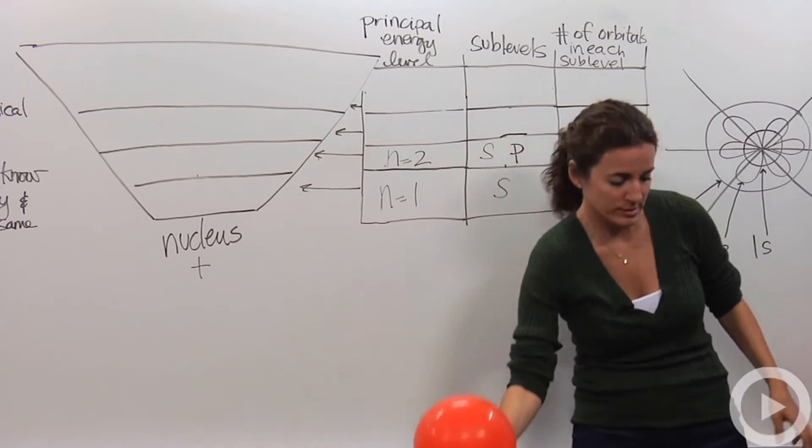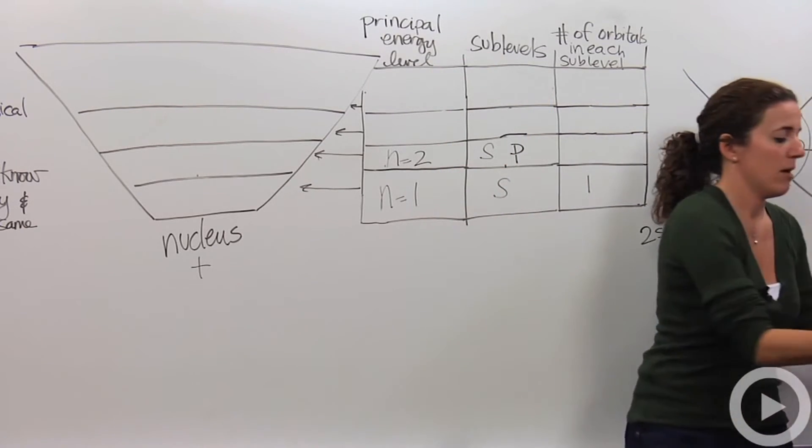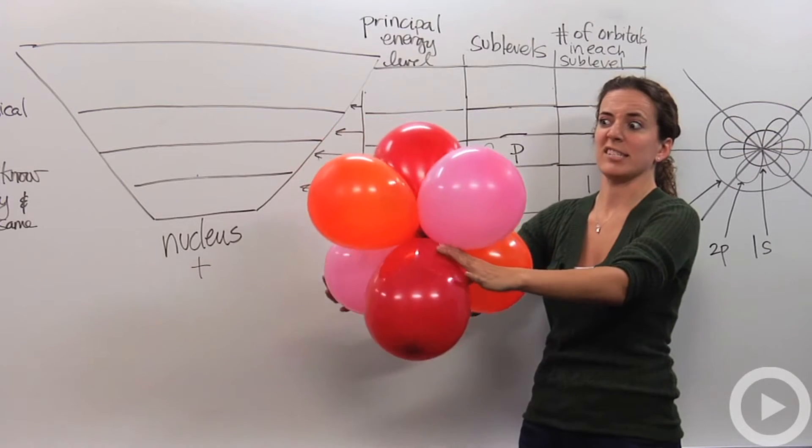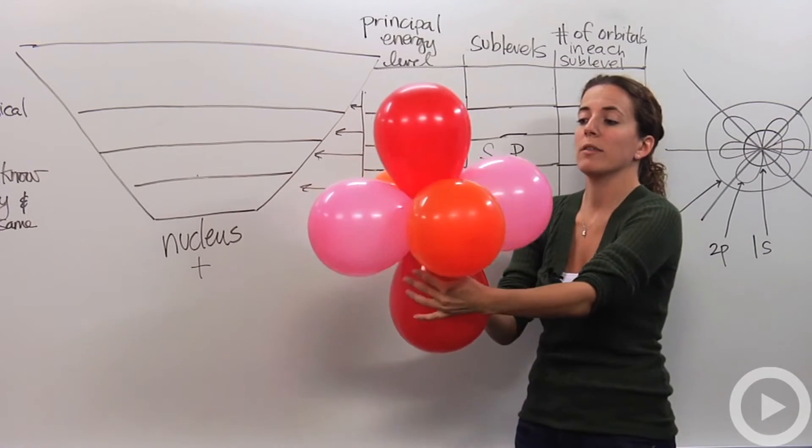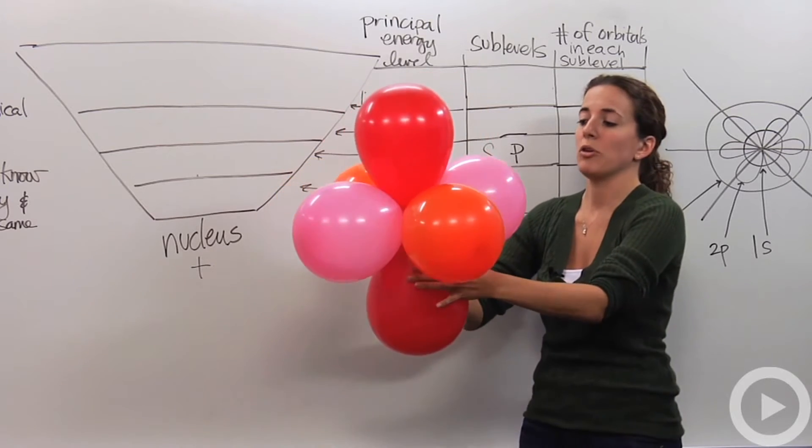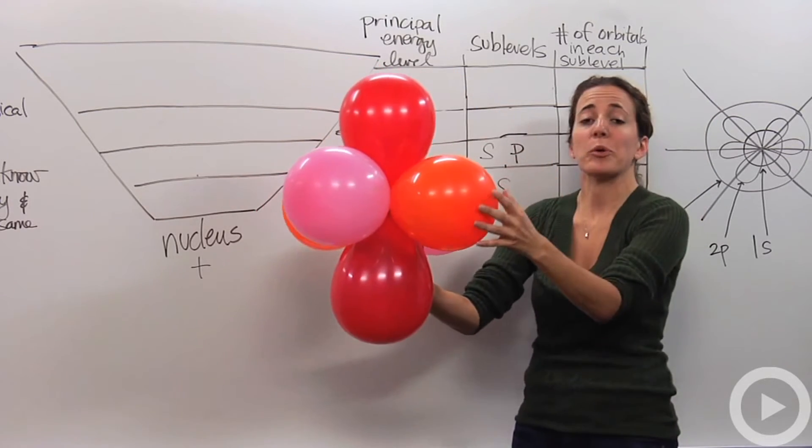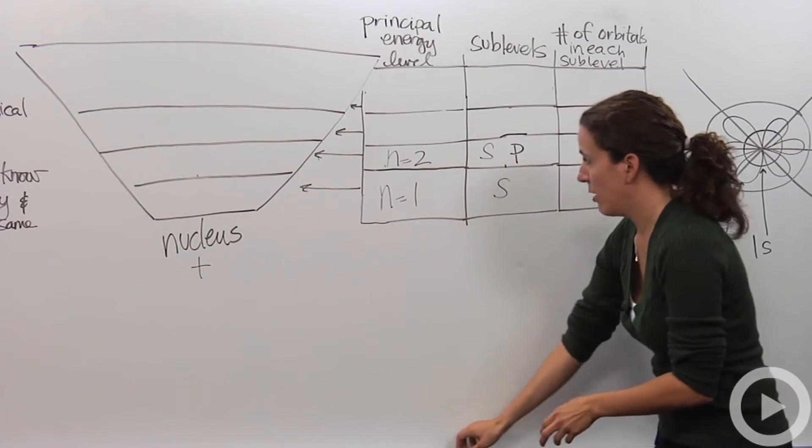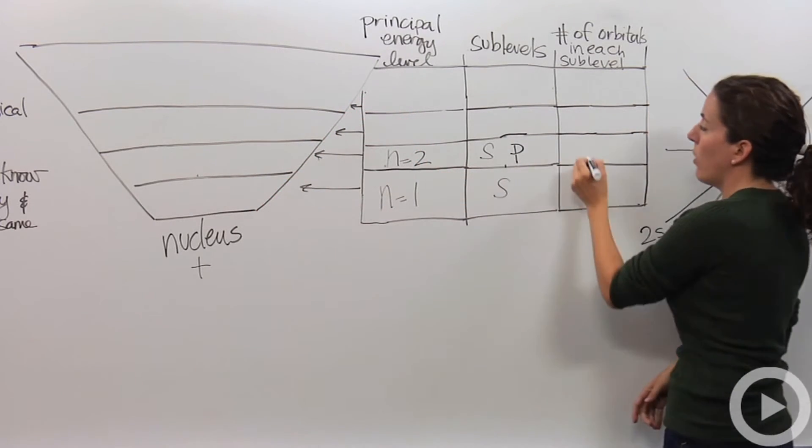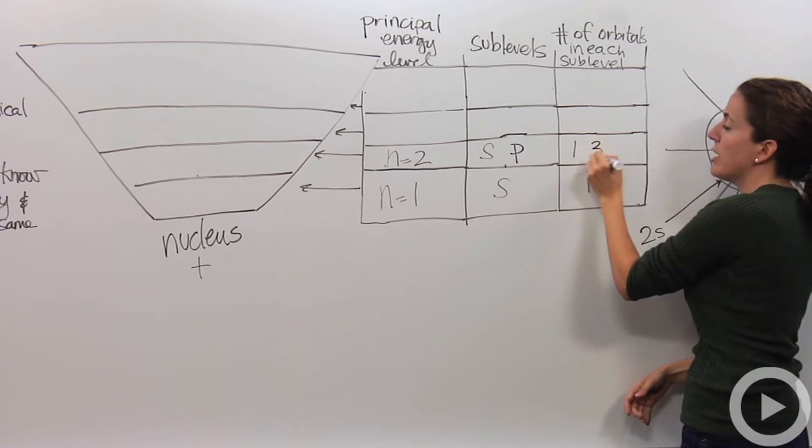So there are actually three of these orbitals together that come together to look like this complicated mess. The electrons can be found anywhere the balloons are. The nucleus is obviously in the center, and the electrons can be found here, and there are three of them put together to make this three dimensional shape. So in the n equals two, we have one s orbital, and then we have three p orbitals.